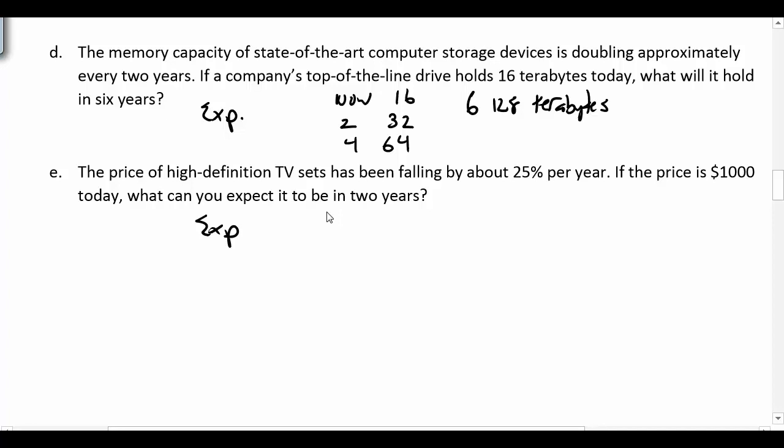Let's kind of do this one stage at a time. So in one year, it's going to go down by 25% of the $1,000, and that's actually $250. Okay, so it's $1,000 minus the $250. So in one year, it's going to be worth $750.